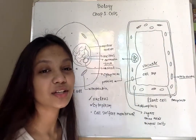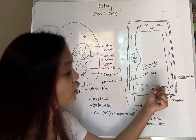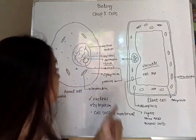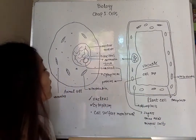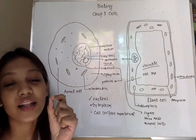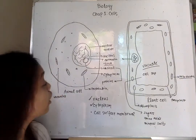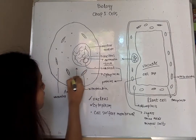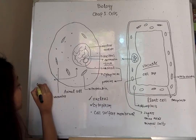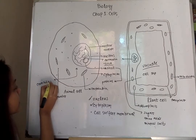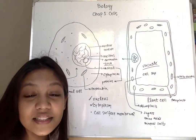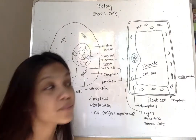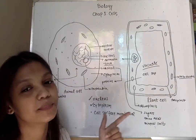The large vacuole is enclosed by a membrane called the tonoplast. In animal cells we can also find a pair of tiny structures close to the nucleus which are called the centrioles. The centrioles play a part in cell division and they are absent in most plant cells.